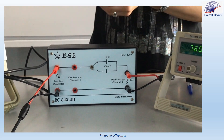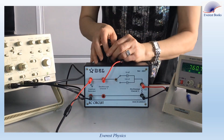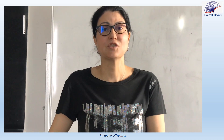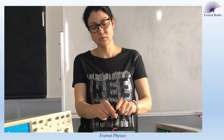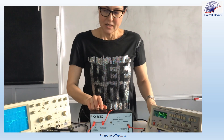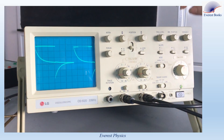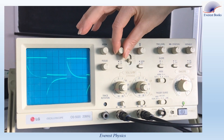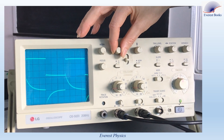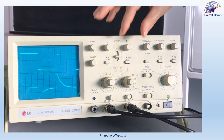Channel two is connected across the generator. The ground terminal of the oscilloscope is electrically common with its metal chassis, so we don't need to connect the ground of channel two. Now observe the curves on the screen of the oscilloscope. I will displace the curve of the voltage across the resistor to the bottom of the screen.